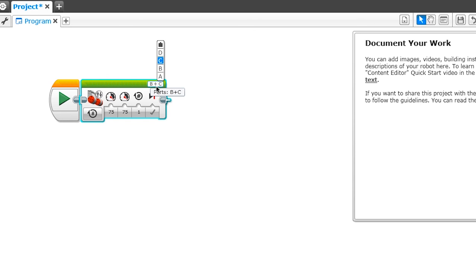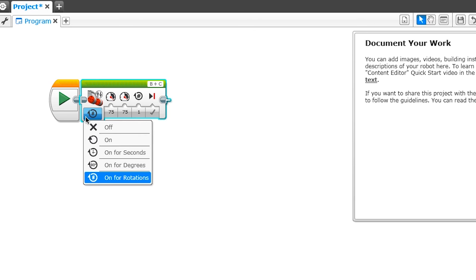You'll notice in the top, it shows letters, and those letters correspond to the motor ports. In this case, B and C are already selected, and since we already plugged our motors into B and C, we are ready to start driving.